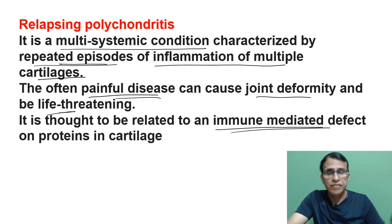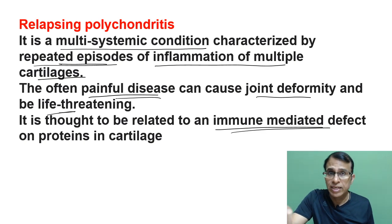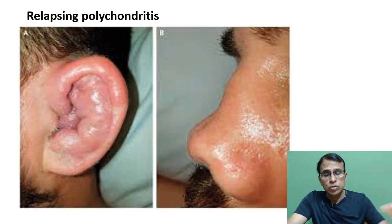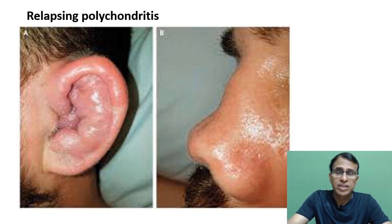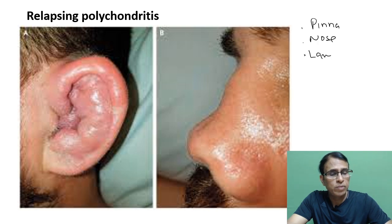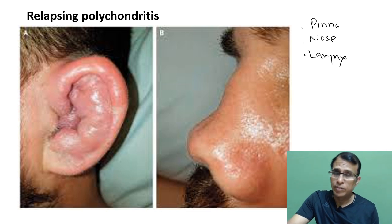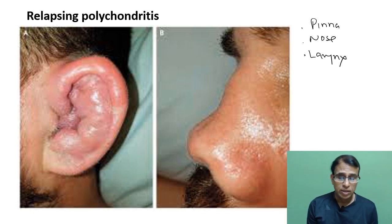It is an immune-mediated defect — the immune system attacks the proteins of the cartilages, causing perichondritis. From the ENT point of view, this condition very commonly affects two cartilages: the pinna cartilage and the nose cartilage, and sometimes the larynx as well. Laryngeal cartilage involvement is not easy to diagnose from imaging, but pinna and nose involvement can be seen clearly.